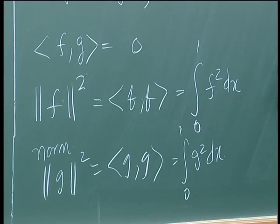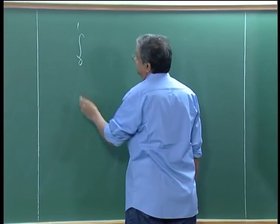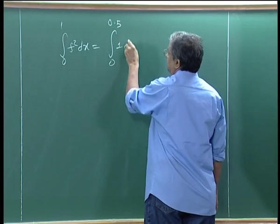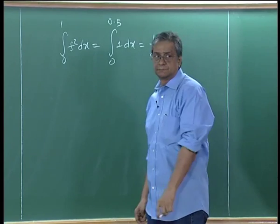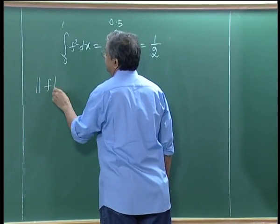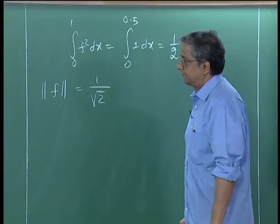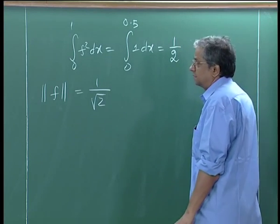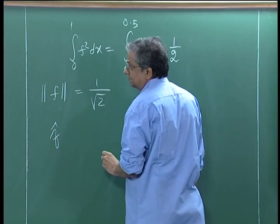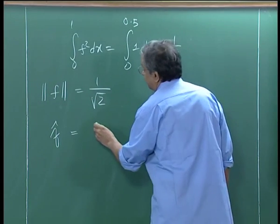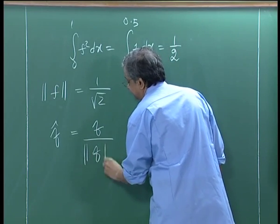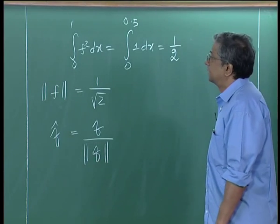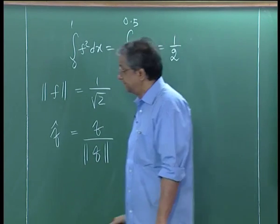What is ‖f‖? It is the integral from 0 to 1 of f² dx, which is actually the integral from 0 to 0.5 of 1 dx, which is 1/2. So ‖f‖ = 1/√2. I can then define a unit vector as f divided by ‖f‖, and as you would expect, its magnitude would be 1.